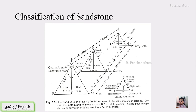The first category is the arenite. If there is 0 to 12.5 percentage of matrix and the concentration of quartz is nearly 95 to 100 percentage, then it is called quartz arenite. If the percentage of feldspar rises from 5 to 25 percentage, then it is called sub-arkose. If there is 5 to 25 percentage of rock fragments present, then it is called sub-lithic arenite. Sub-arkose is for the feldspar side and sub-lithic arenite is for the rock fragment side.